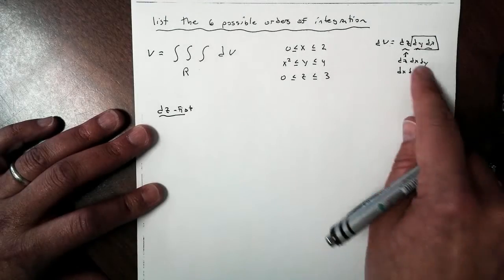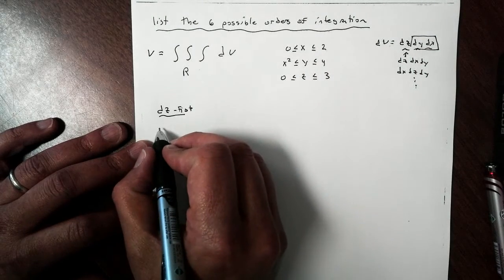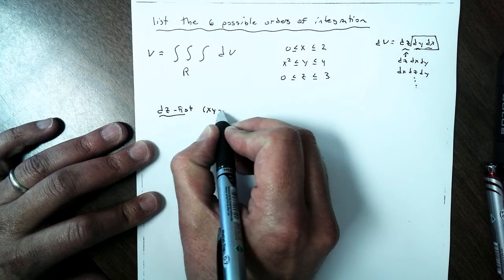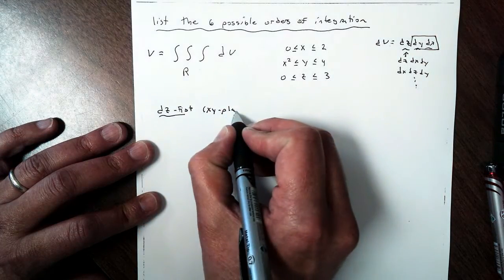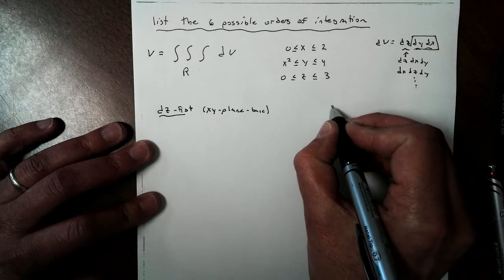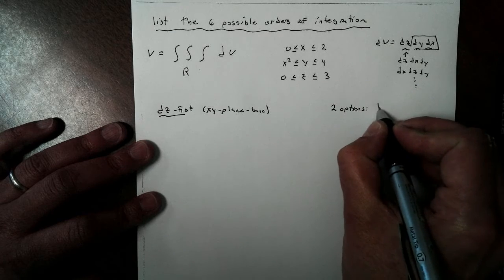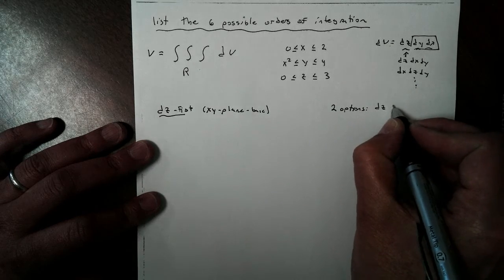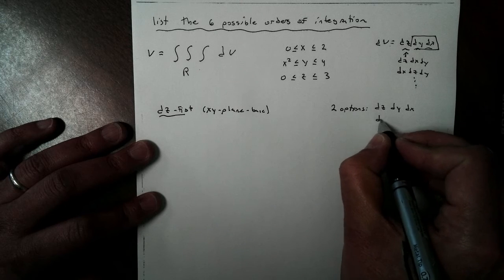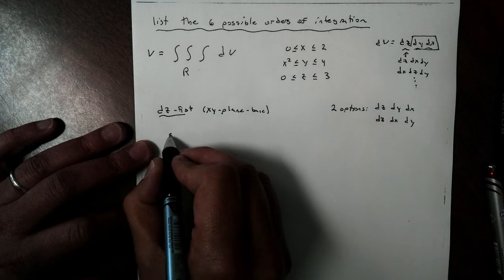So we're going to start with DZ, and then we're going to talk about the base. So to do DZ first, this is telling us that we're going to be on the XY plane for our base. And we actually have two options. If I start with DZ, I could be DZ, DY, DX. Or I could be DZ, DX, DY. So let's talk about the first one.